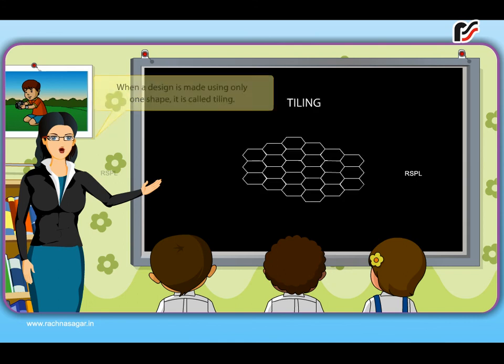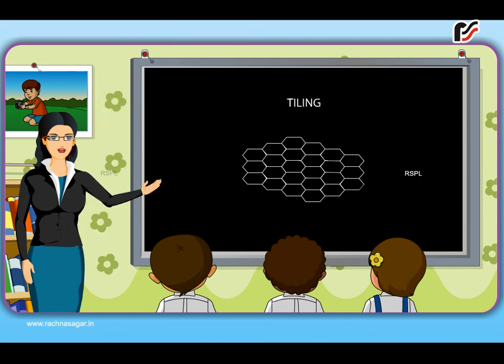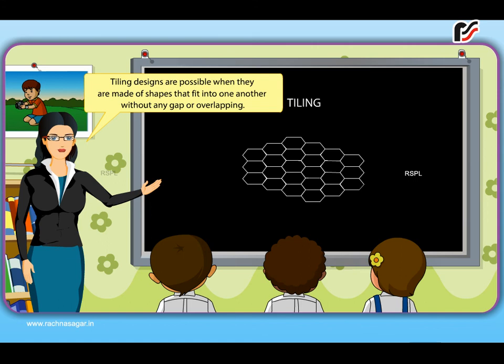Tiling. When a design is made using only one shape, it is called tiling. Tiling designs are possible when they are made of shapes that fit into one another without any gap or overlapping.